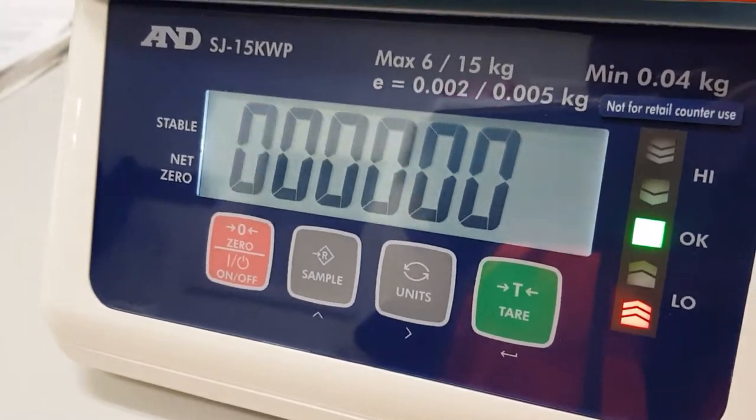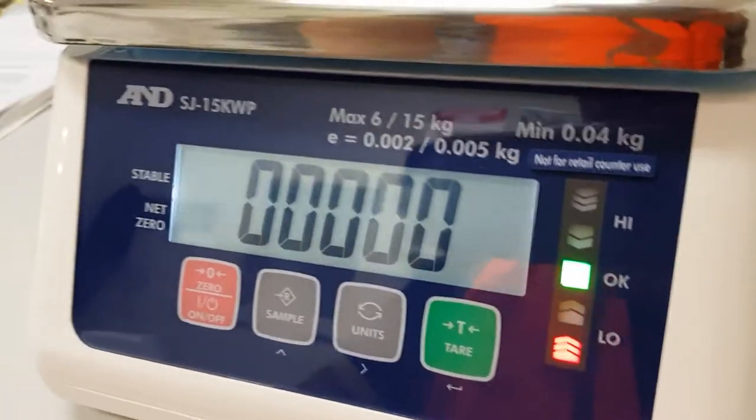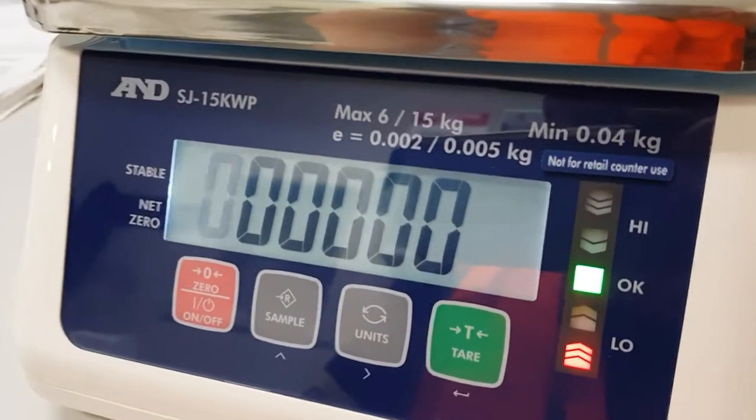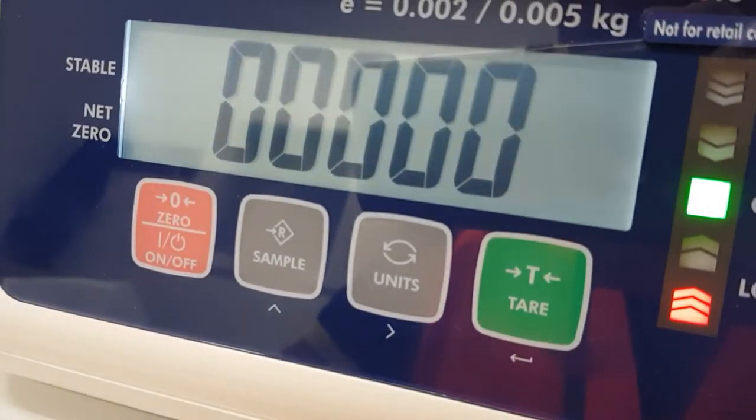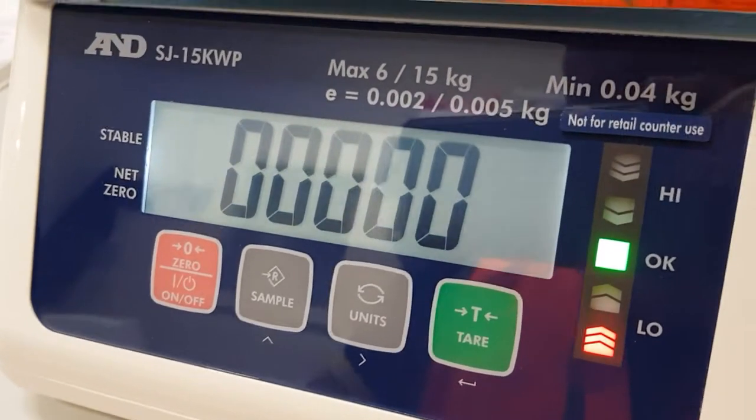In the case of changing the values, let's say we want to set this with a lower limit of one kilo and an upper limit of 1.5 kilos. You'll see underneath each button there's a secondary symbol, which is what we're going to refer to now.